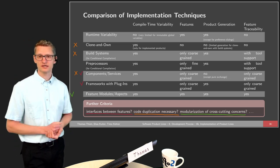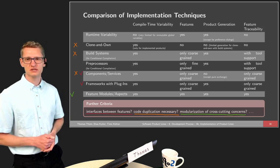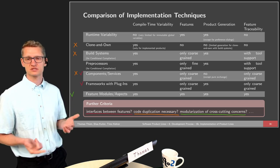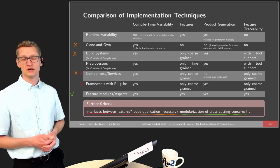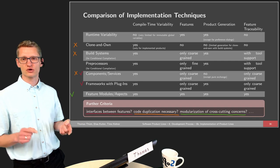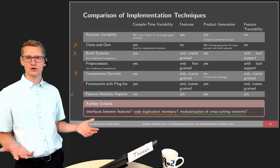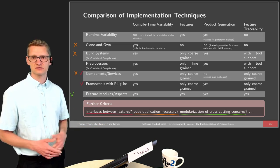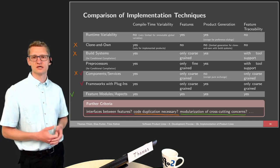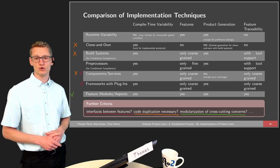The question is which techniques avoid code duplication as much as possible. We see that with clone-and-own, build systems, components, and services, we have some inherent code duplication. For clone-and-own it's the worst because we are cloning the whole system. For build systems it's a bit reduced because we only clone certain files. For components and services, it's about the glue code and service orchestration where some duplication occurs.